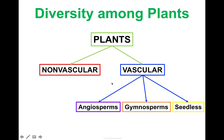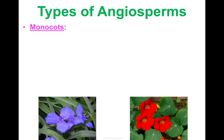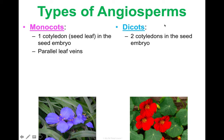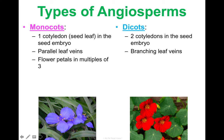Angiosperms can be further subdivided into monocots and dicots. Monocots have one cotyledon in the seed embryo — a seed leaf — hence the name monocot. Dicots have two cotyledons. Monocots have parallel leaf veins, as seen in spiderwort, whereas dicots have branching leaf veins, clearly visible in nasturtium. Monocot flower petals grow in multiples of three — three, six, or nine. Dicot flower petals grow in multiples of four or five, so a five-petaled flower indicates a dicot.